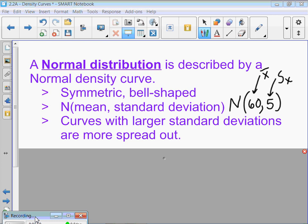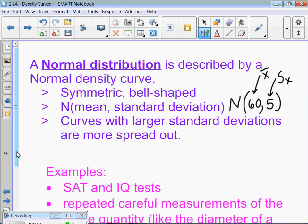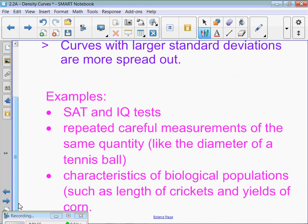Any kind of IQ test, they're going to make into a normal distribution. Similar things, like if you repeatedly measure the same number, like the diameter of a tennis ball. They're all going to be very close. They will be normally distributed. And characteristics of biological populations, such as length of crickets and yields of corn.